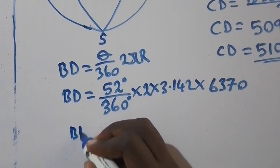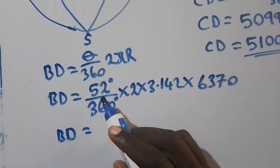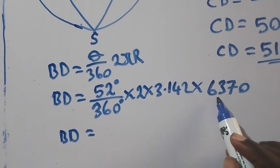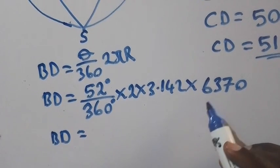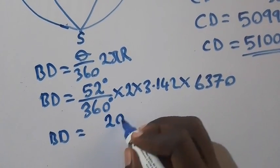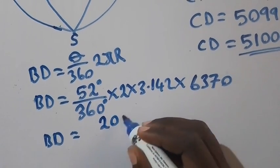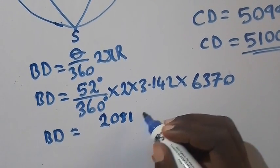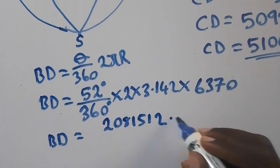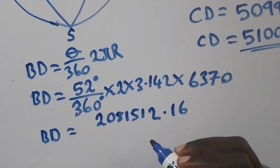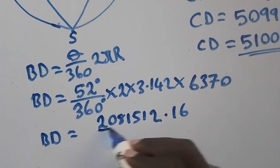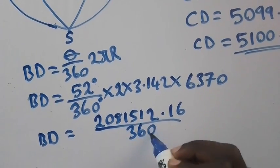So BD will be equal to: we have to punch on the calculator 52 times 2 times 3.142 times 6,370. So when you punch on the calculator, you are getting 2,081,512.16 divide by 360.